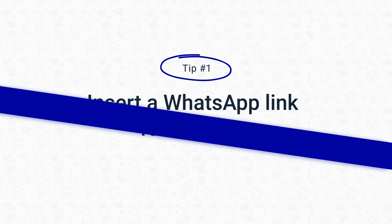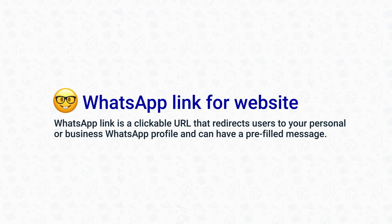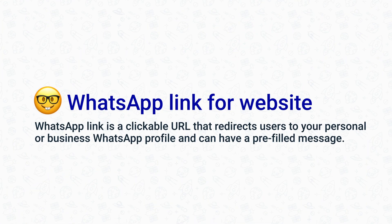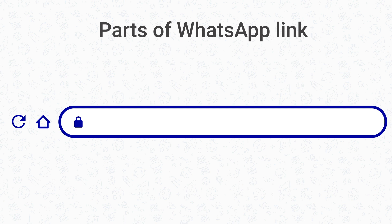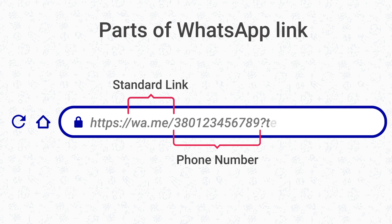A WhatsApp link is a clickable URL that redirects users to your personal or business WhatsApp profile and can have a pre-filled message. The link is simple and includes three elements: a standard link, a phone number, and a pre-filled message, enabling customers to start chatting with a business directly on WhatsApp by clicking it.